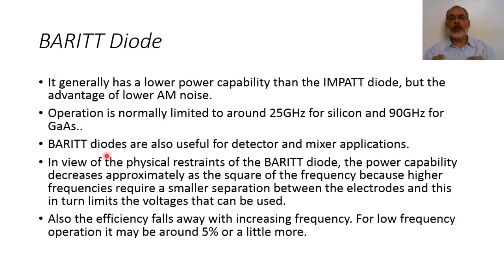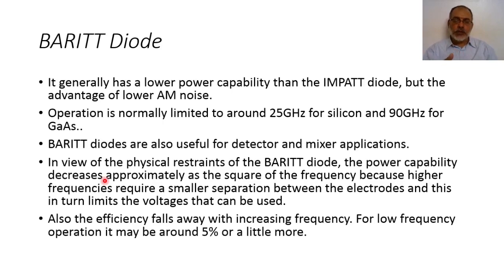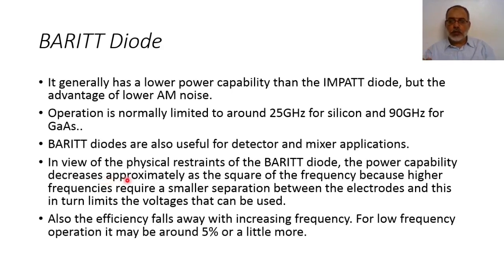BARITT diodes are also useful in detector and mixer applications, from the point of view of the non-linearity of the BARITT diode, similar to the IMPATT diode. In view of the physical resistance of the BARITT diode, the power capability decreases approximately as the square of the frequency, because increasing the frequency means the drift region must be decreased, and if the drift region is decreased, the applied voltage must be decreased. The power capability is decreased with the square of the frequency because higher frequency requires smaller separation between the electrodes, which in turn limits the voltage that can be used.